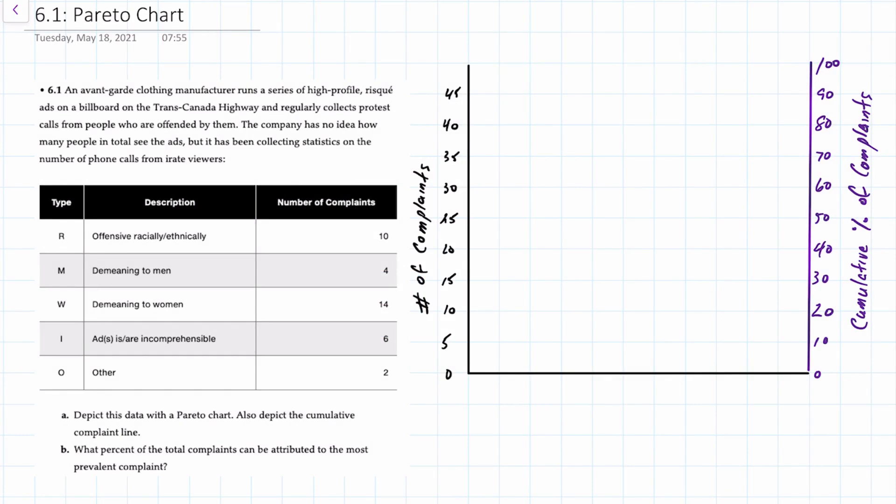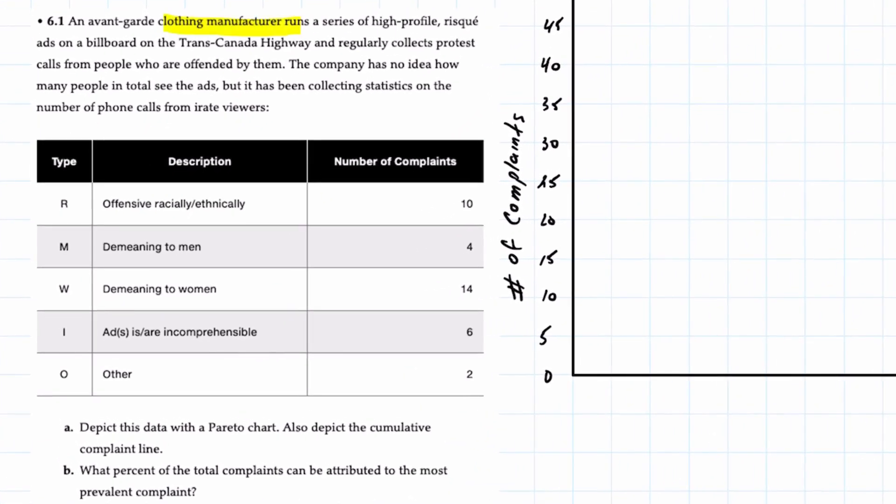This question relates to problem 6.1 in your text and here's our data. So we have a clothing manufacturer that runs a series of high-profile risque ads on a billboard on the Trans-Canada Highway